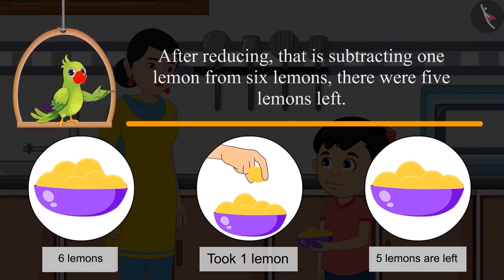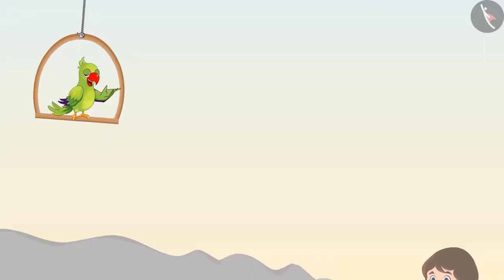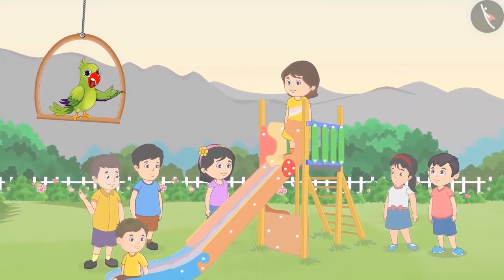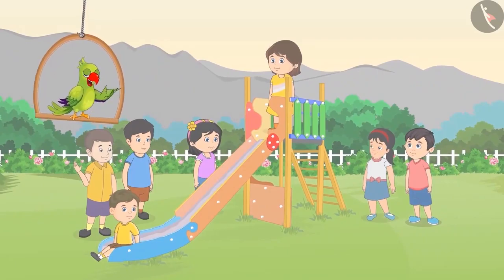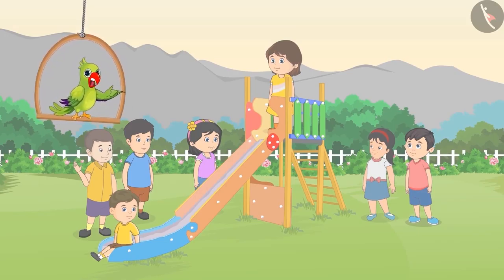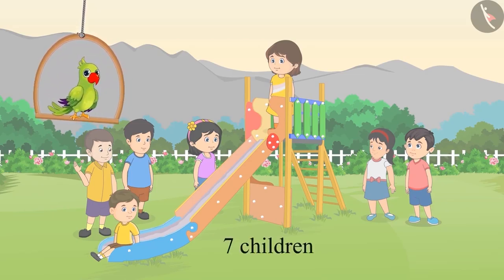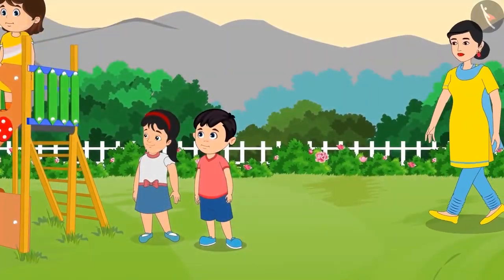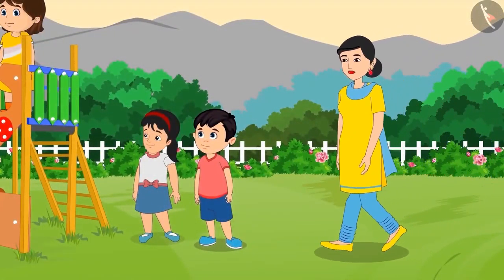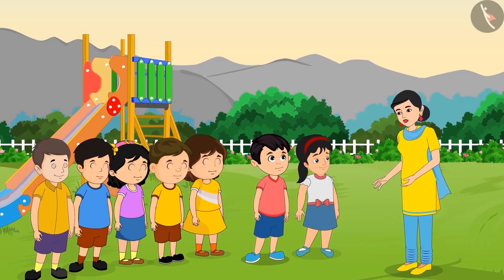Friends, did you see how after subtracting one lemon from six lemons there were five lemons left? It is evening time and Choto and Pinky are playing with five of their friends in the park. So children, can you tell me how many children are playing in total? Yes, five and two — that means seven children!